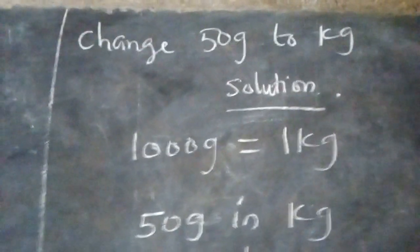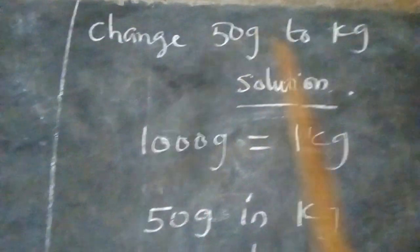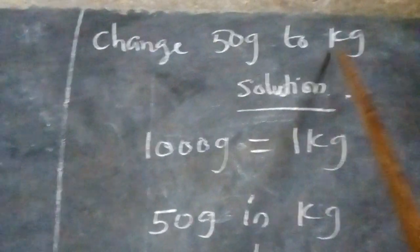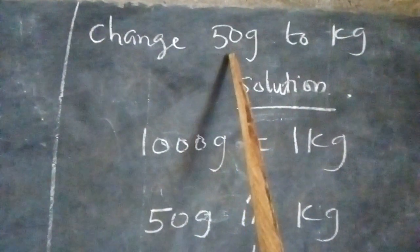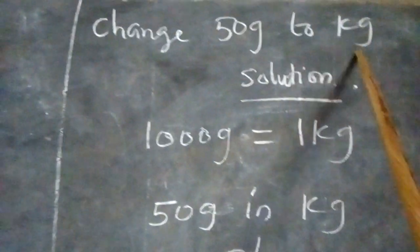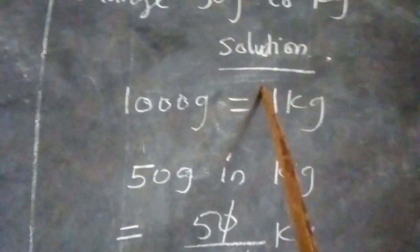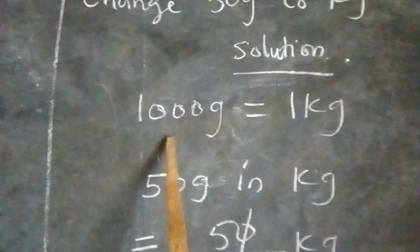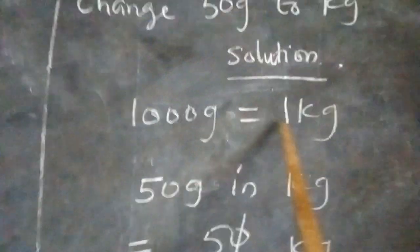Change 50 grams to kilograms. We have to convert this value from grams to kilograms. Solution: We should know that 1000 grams makes one kilogram.